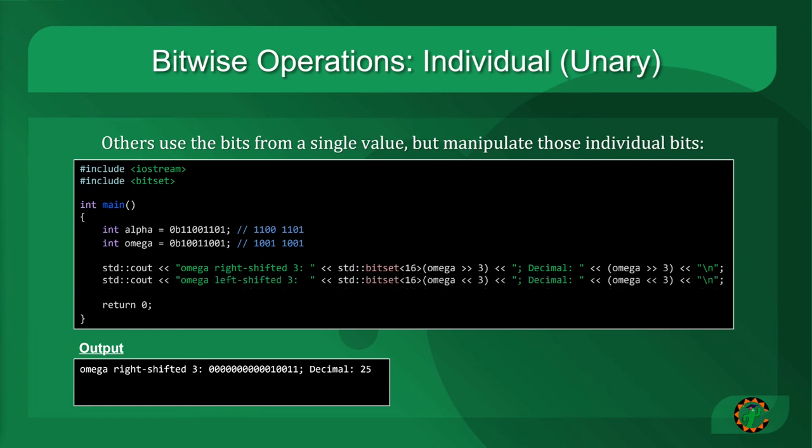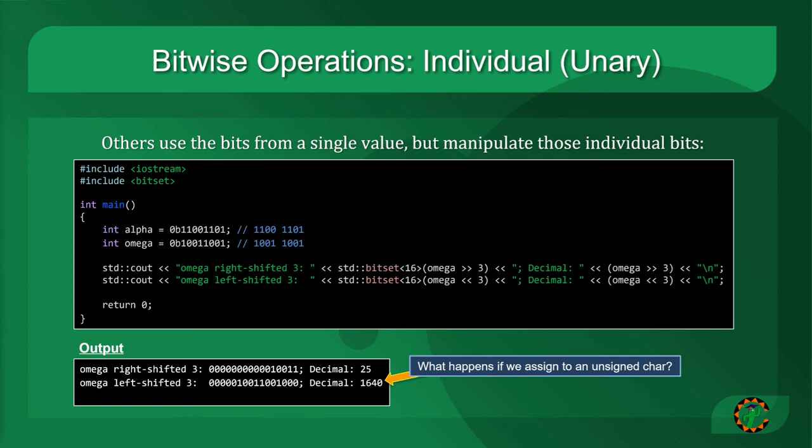We can also left shift, which uses the less than symbol twice in a row. If we left shift omega by 3 bits, we'll see that zeros are added on the right and all the bits are shifted to the left. This yields a value of 10011000 or 1640 in decimal. It's worth considering what happens if we shift a value past the end of the number of bits that that type holds. For example, if we took an unsigned character, which is one byte on typical systems, eight bits, and we shifted it left in this fashion, if you guessed that the extra bits are truncated, that they're dropped, then you guessed correctly. If this value had been an unsigned character, the resulting value would have been 11001000. In other words, we would have lost those three high bits because of the shift.